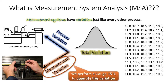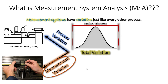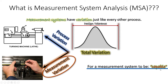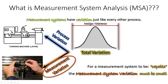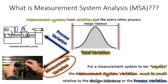That is the point of a gauge R&R. We analyze our measurement system to quantify how much variation is coming from our measurement system versus how much actually comes from our product and our process. A lot of this comes back to whether we're using the right measurement system. For a measurement system to be considered capable for its intended purpose, the variation that comes just from the measurement system should be small — small relative to your design tolerance or small relative to your process variation. We'll cover that in detail in the third video.